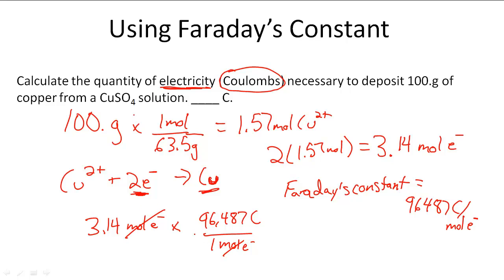So we can cancel out moles of electrons and we're just left with coulombs. When I multiply these together and divide by one, I get 3.03 times 10 to the fifth coulombs is the quantity of electricity necessary to deposit copper from this solution.